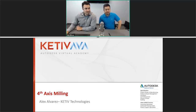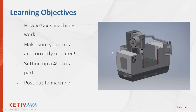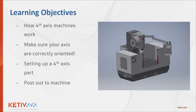Some learning objectives for today: we're going to be talking about how 4th axis machines work and where that 4th axis comes from. We also want to make sure that you correctly set up your part — sometimes you need to create working planes, sometimes you just select a face in your model. Finally, we'll cover common errors people experience, everything from creating the setup to adding toolpaths to posting out to your machine.